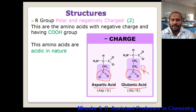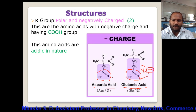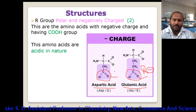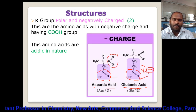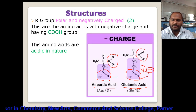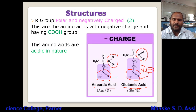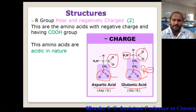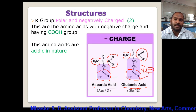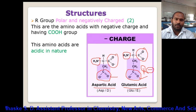The second example is glutamic acid, which has a CH2-CH2-COOH side chain. In both cases the R group is polar and carries a negative charge on the additional carboxyl group. These two amino acids are acidic in nature. The negative charge of the extra carboxyl is not fully balanced by the amino group, leaving a net negative charge on the side chain.